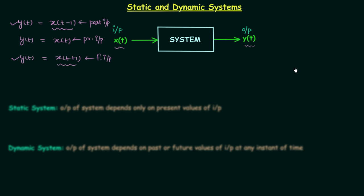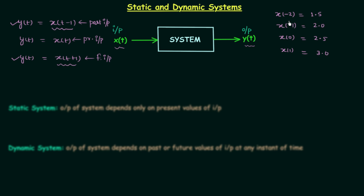Let's take a numerical example. Suppose x(−2) = 1.5, x(−1) = 2.0, x(0) = 2.5, and x(1) = 3.0. These are the different values of signal x(t) at different time instants. When t = −2, x(t) = 1.5; when t = −1, x(t) = 2.0; when t = 0, x(t) = 2.5; and when t = 1, x(t) = 3.0.